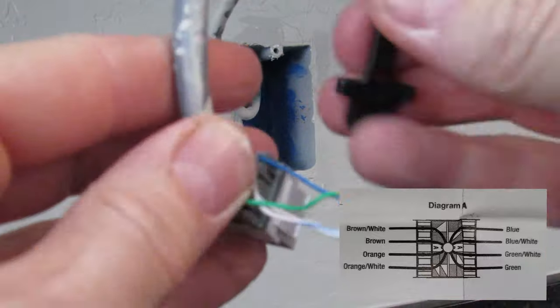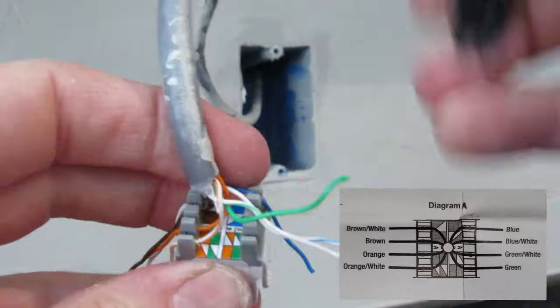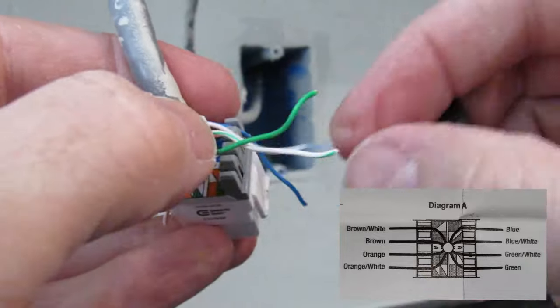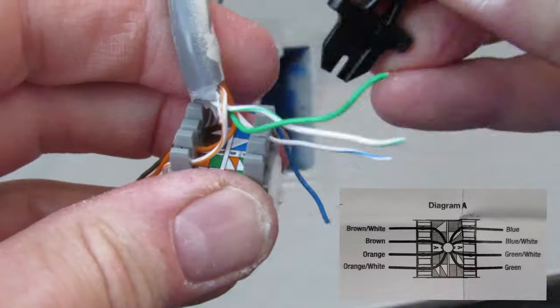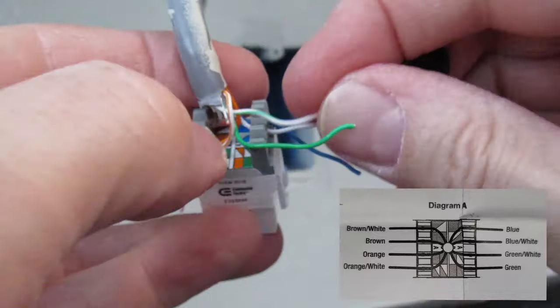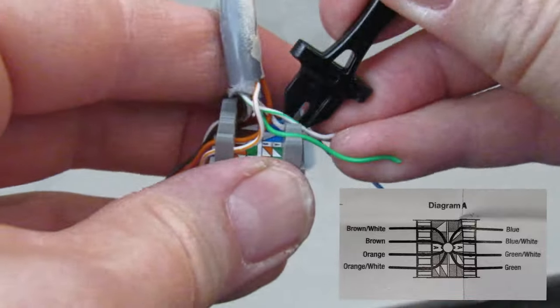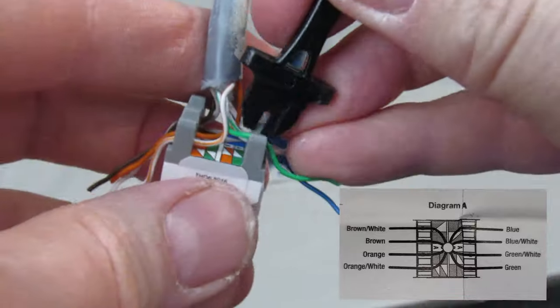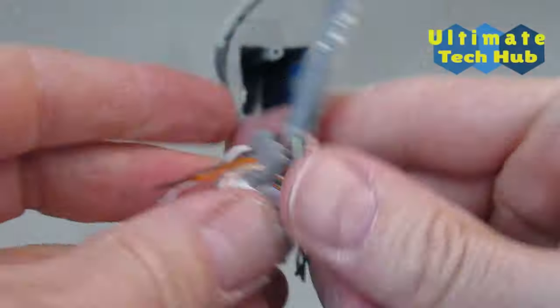Next let's do the right side. We'll start with blue and then blue white, green white, then green. Once again make sure you punch them down all the way. I've seen it where they didn't go all the way in or one didn't go all the way in and then there was an issue with connectivity. So just make sure they're all down.